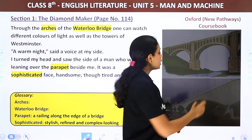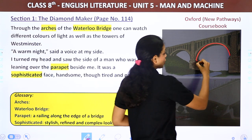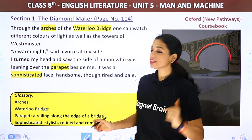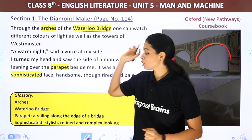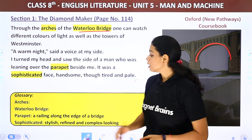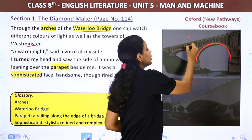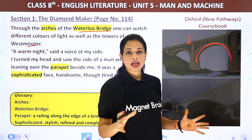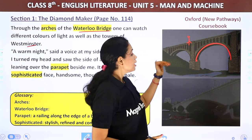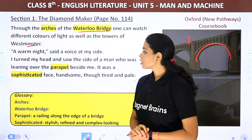Through the arches of Waterloo Bridge, one can watch different colors of light as well as the towers of Westminster. The arch — that semicircle-shaped protector — from here one could see the multicolored lights and the city. He was just enjoying the view. Then a voice at his side said, 'A warm night.' He turned his head and saw a man who was leaning over the parapet beside him.